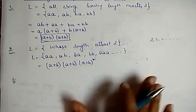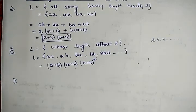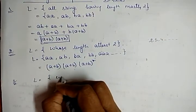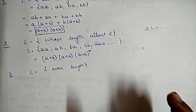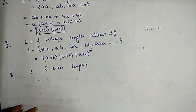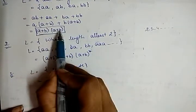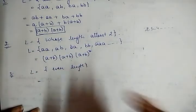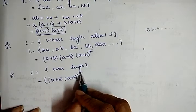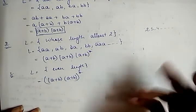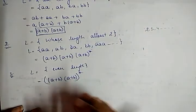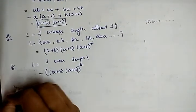Example 3: write a regular expression for all strings having even length. Even length means lengths 0, 2, 4, 6, and so on — this is an infinite language. For length two we have (a+b)(a+b), so for even length we write ((a+b)(a+b))* — putting zero gives epsilon (length 0), putting one gives length 2, and so on. This gives us all strings of even length.